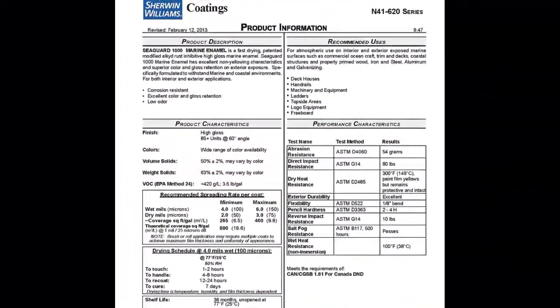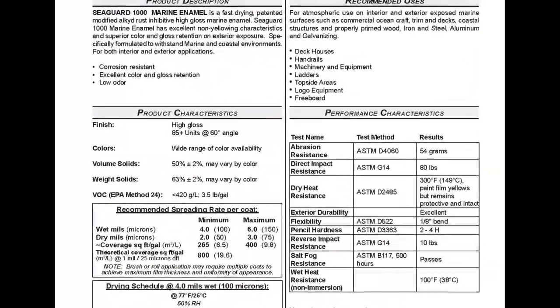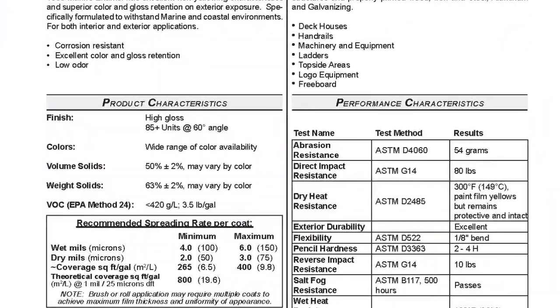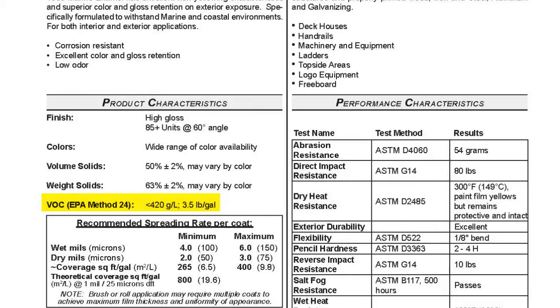A PDS is a document that gives an in-depth description of coating characteristics and its potential uses. VOC information can typically be found in sections like product characteristics. If your coating has more than one component, the PDS is typically a great resource of VOC information for the mixture.